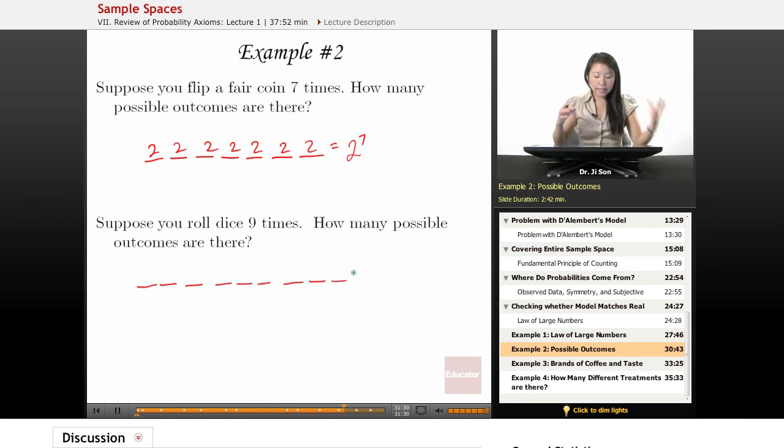So think of each roll of the die as a potential event that could have six different possibilities. And so each has six. And so this would be six to the ninth power.